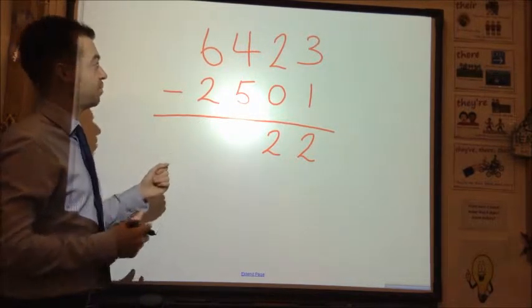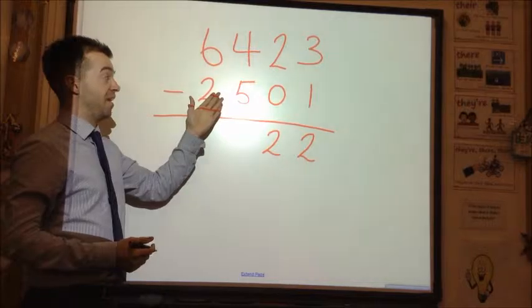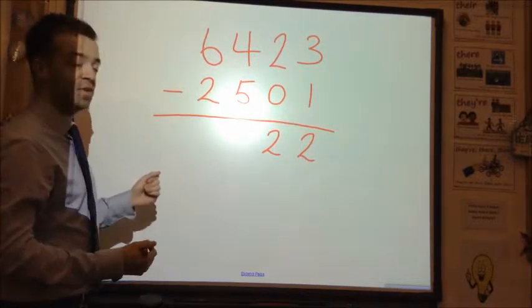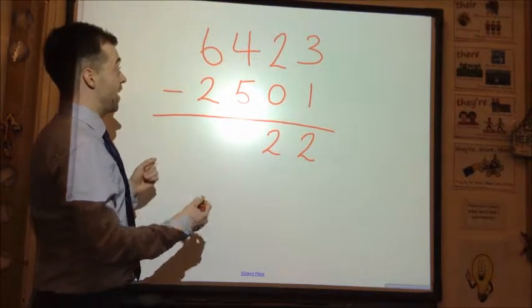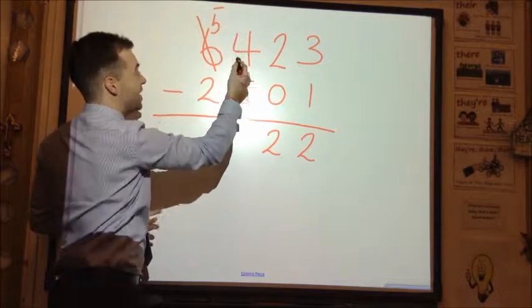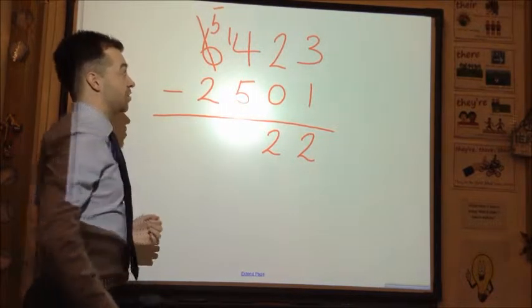Now we come to a little bit of a problem. 4 take away 5. We can do that, it's minus 1. But in column subtraction, we don't allow it. So what we do is we steal one from the thousands column. We steal from the 6, which becomes a 5, and we carry that one over into the hundreds column.